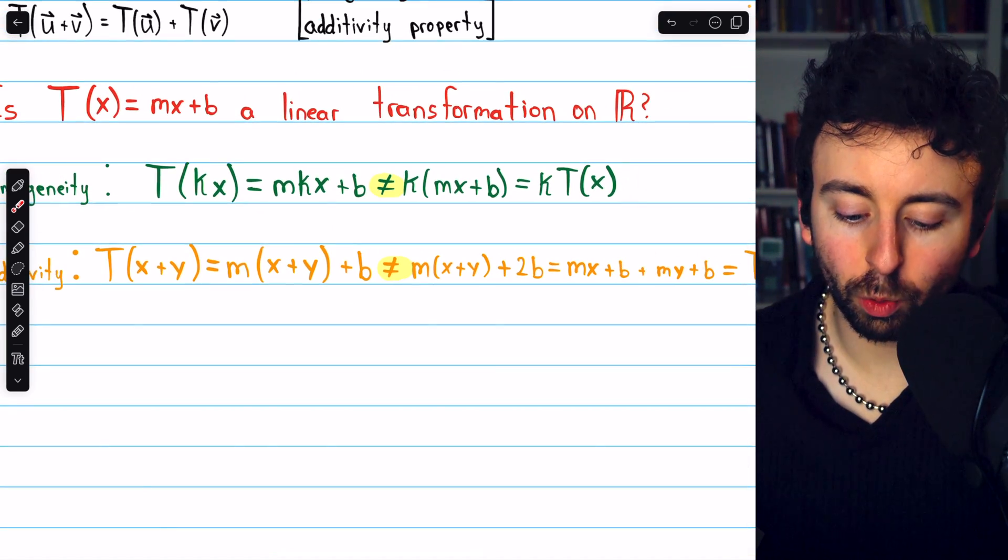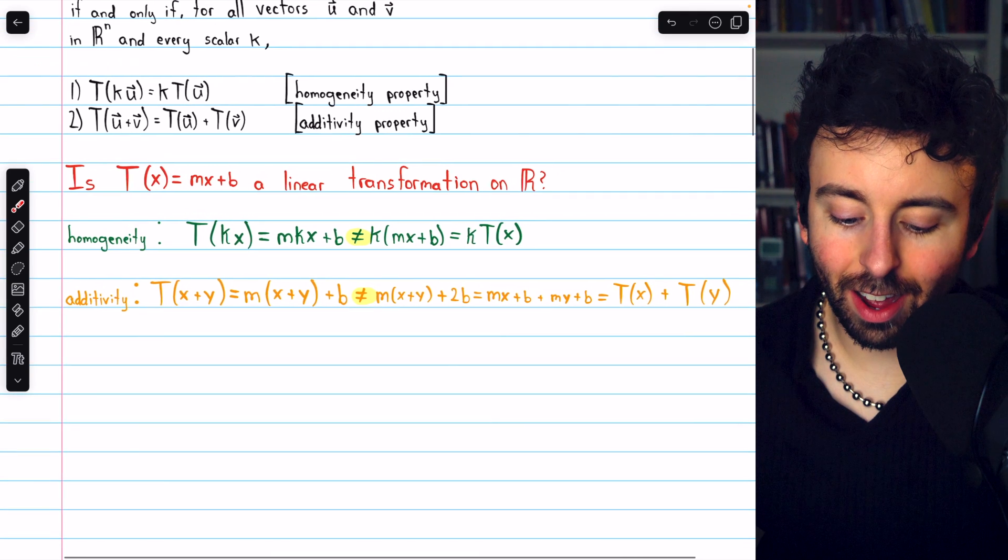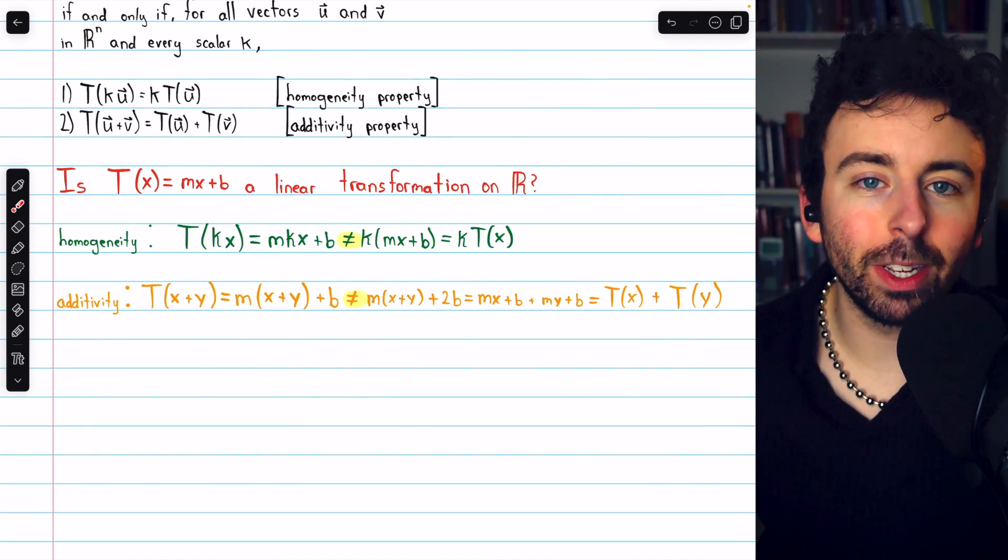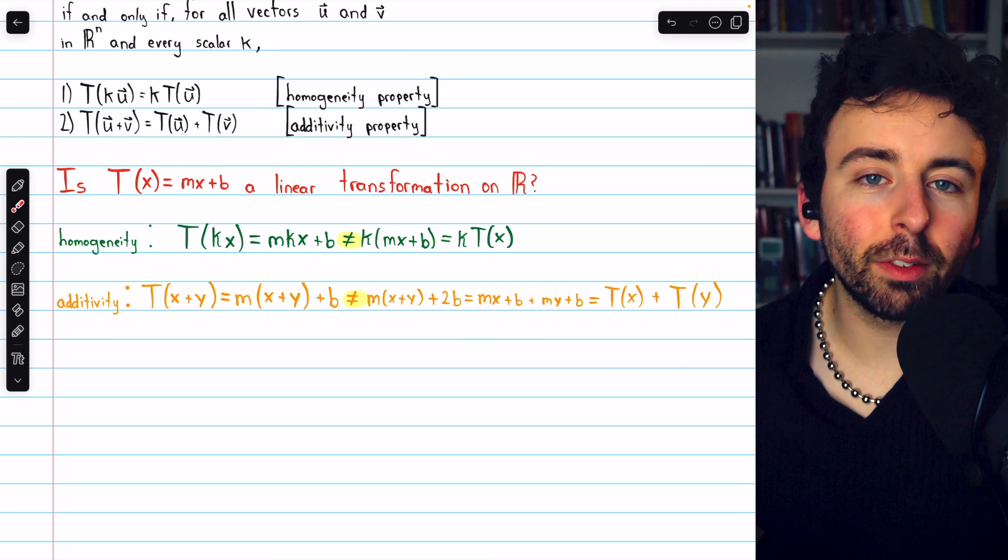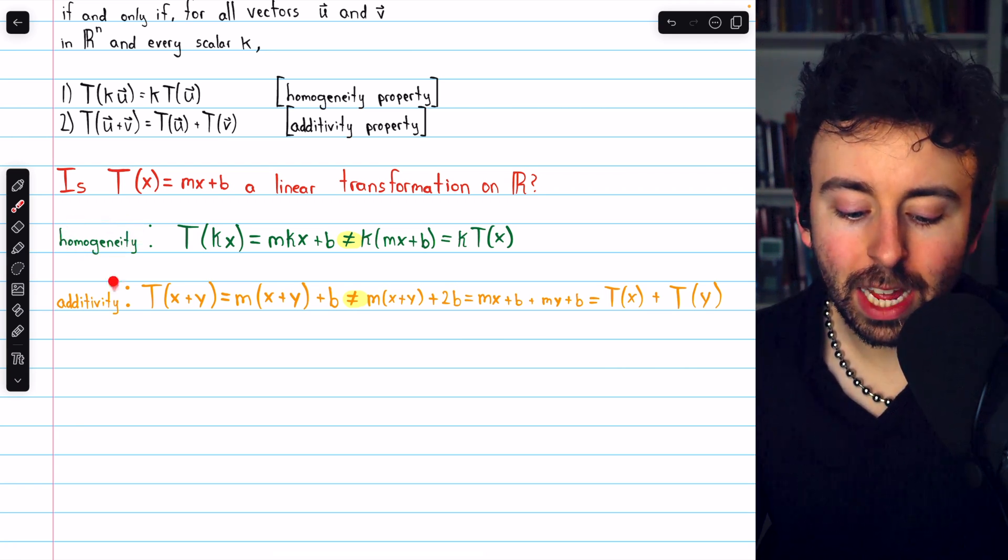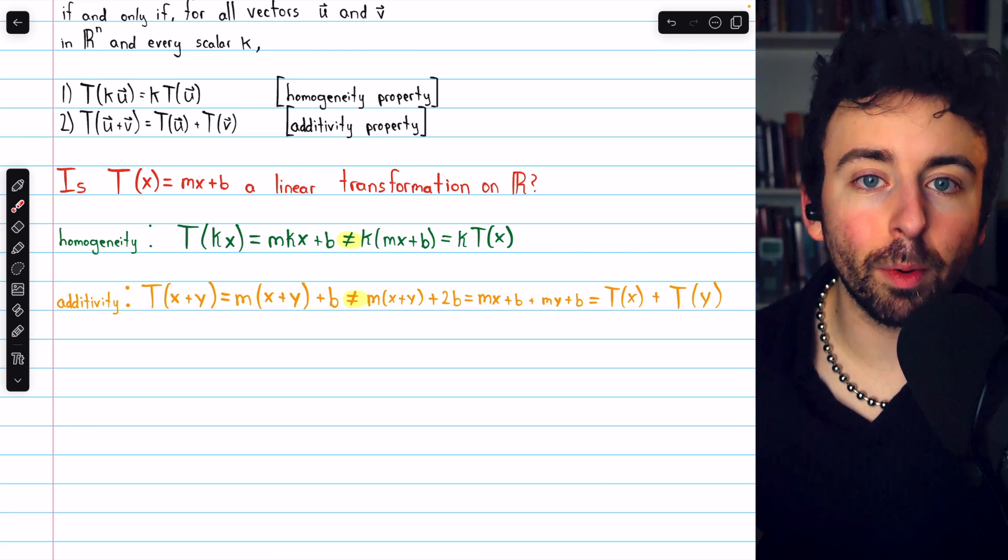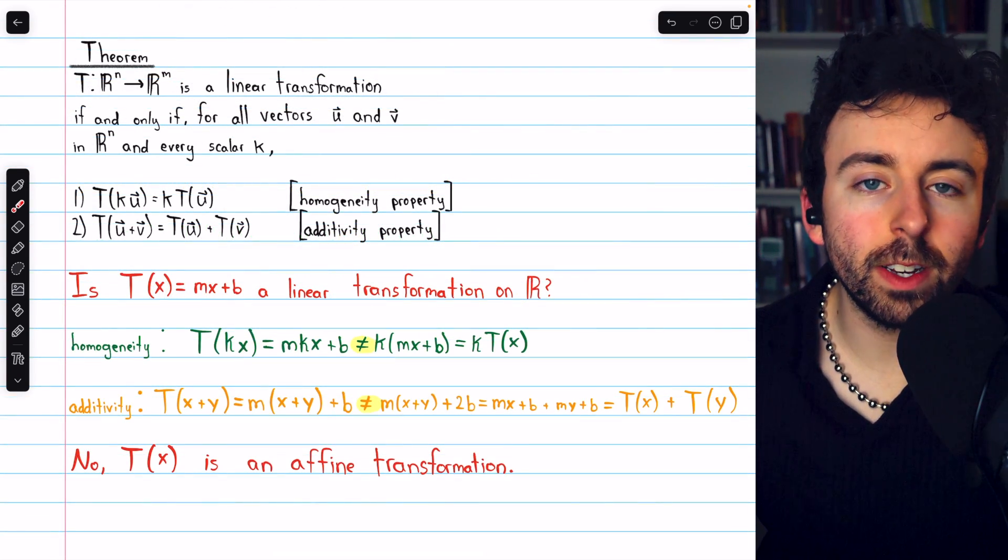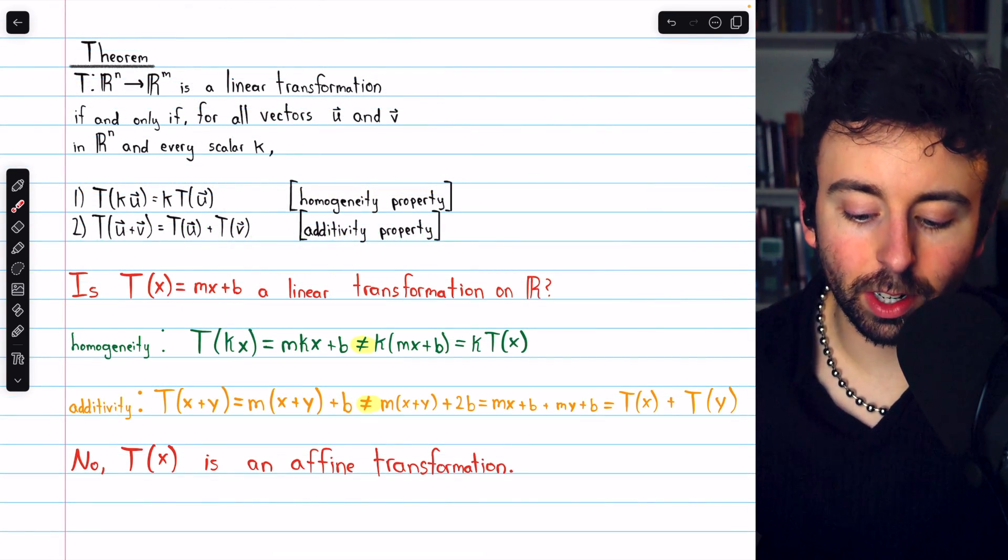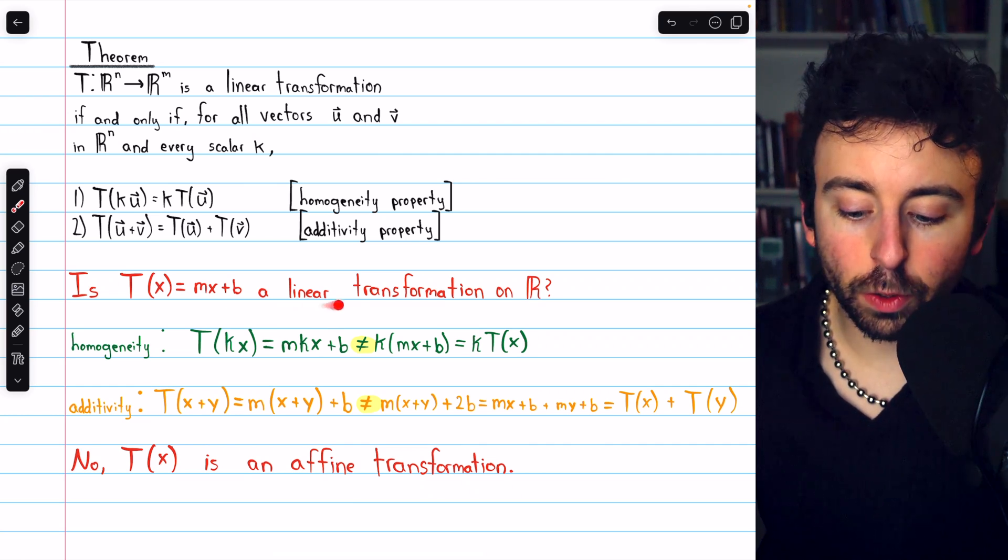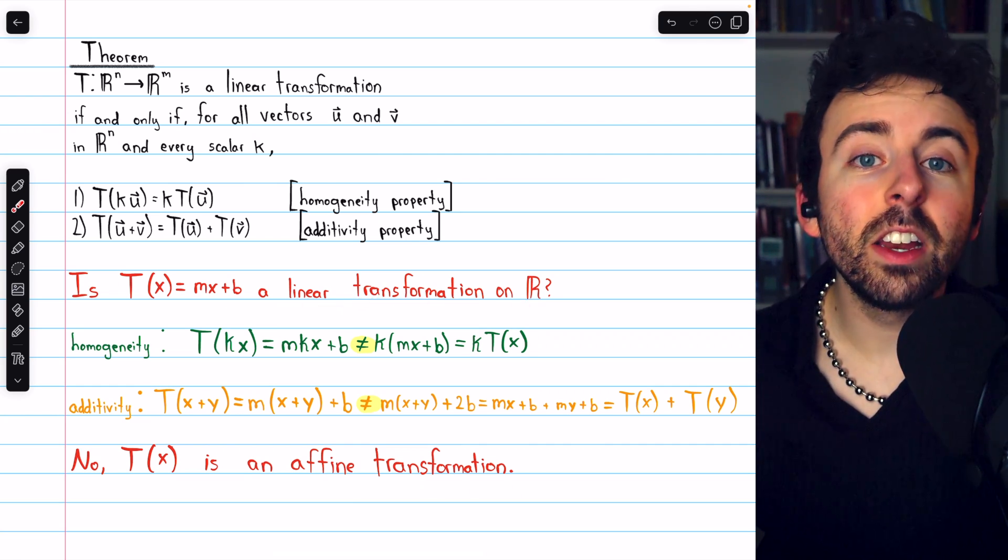And that's not equal to what we saw we were getting when we plugged x plus y in. So it does not satisfy the additivity property either. What we traditionally call a linear function satisfies neither the homogeneity property nor the additivity properties that define linear transformations. So if the transformation T is our typical equation of a line, is that a linear transformation on R? No.